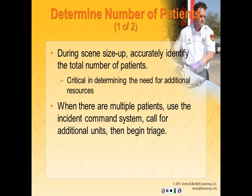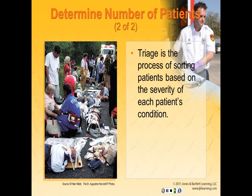During scene size-up, it is important to accurately identify how many patients you have to care for — this is a critical factor in determining whether additional resources are needed. When you have multiple patients, use the Incident Command System, call for additional units, and begin triage. Incident Command is a system implemented to manage disasters and mass casualty incidents in which section chiefs report to the commander. Triage is the process of sorting patients based on severity of condition, and we use the START triage system which categorizes patients as red, yellow, green, and black.